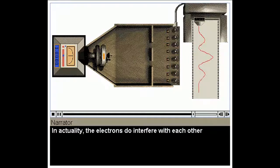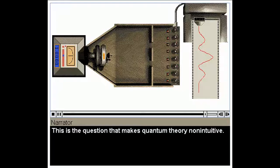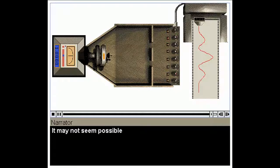In actuality, the electrons do interfere with each other, behaving like waves. But how can the electrons interfere with one another when they pass through the apparatus one at a time? This is the question that makes quantum theory non-intuitive. It may not seem possible, but this is the way nature works.